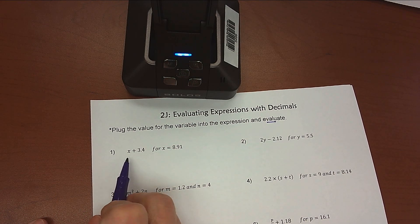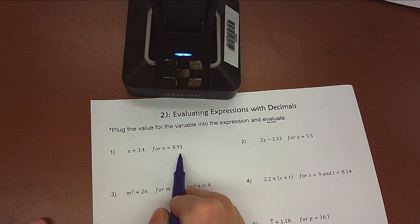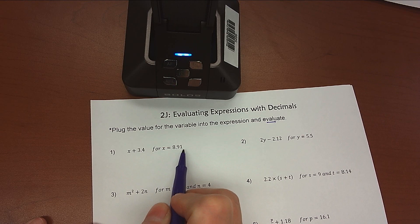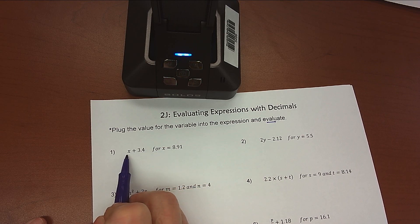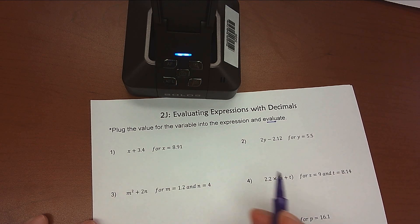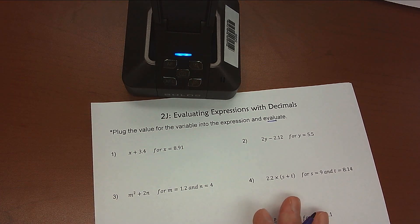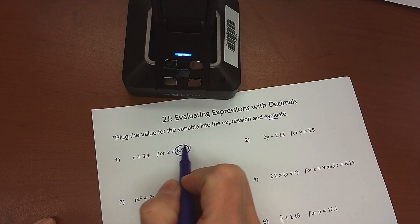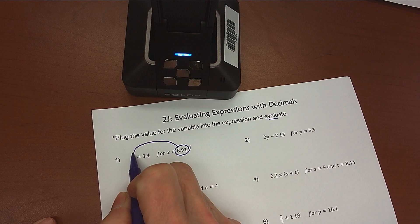And so when I have a problem like this, this is x plus 3.4 for x equals 8.91. My procedure is that I'm going to take this 8.91 and substitute it in for the x, because we see that x and 8.91 are both equal, therefore they can replace each other. So I'm going to take my 8.91 and substitute that into the x.